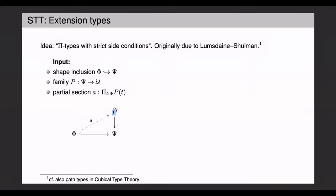Then we look at a family P defined over psi, and then we fix a partial section defined only on phi. Then we're interested in all the terms B, which are sections of P defined on psi, that judgmentally or strictly restrict to A. And the type of all those extensions is called the extension type.